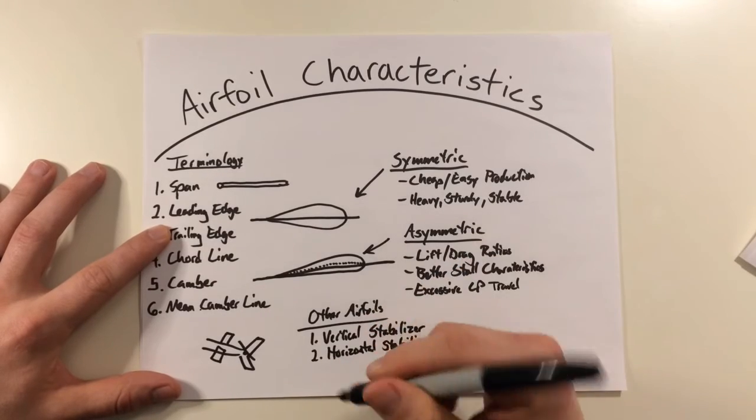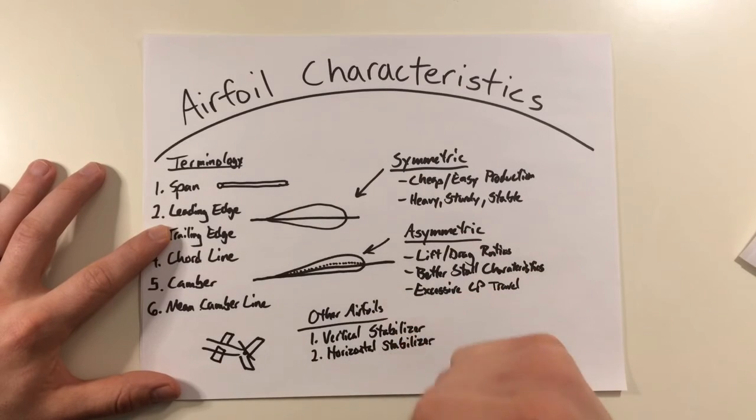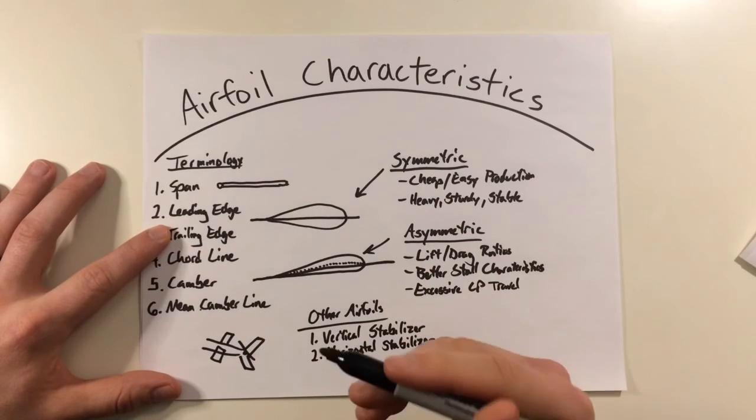They counter the nose down tendency by pushing the nose up. In essence, they're pushing the tail down, which pivots the nose up. And it keeps you from having to stand on your pedals when you're flying faster through the air. It keeps the helicopter level.